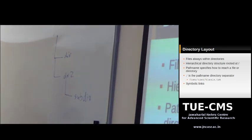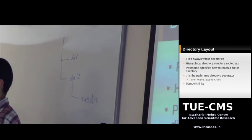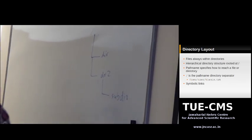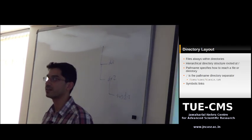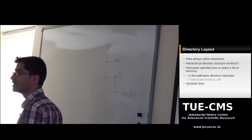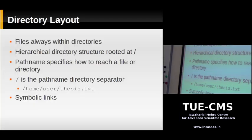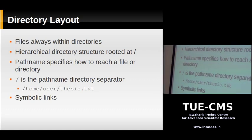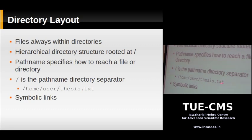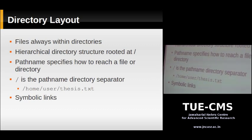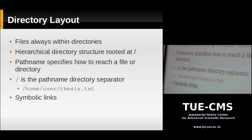Unlike Windows which uses a backslash to separate directories, in Unix it's a forward slash. To specify the location of a file in the file system — this whole structure is called the file system — you start with a slash (the root directory at the top), then specify each directory separated by slashes. For example, within the root directory you have the home subdirectory, and a user subdirectory within home, and then the file name. This is called a path name — it tells you how to reach a file in your file system.